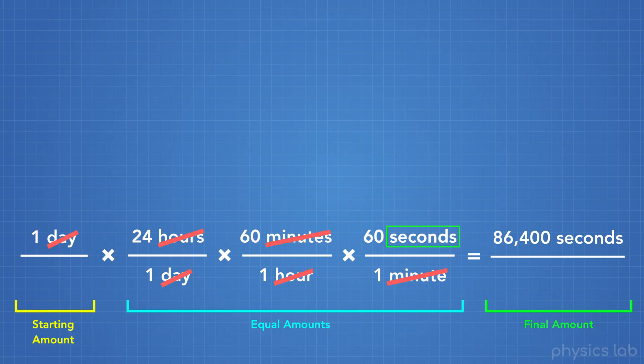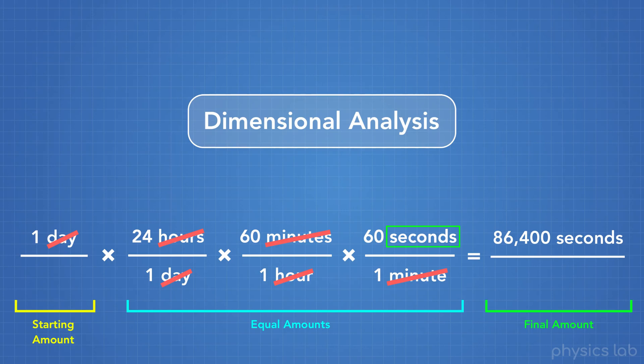So this method of converting between units is called dimensional analysis. And even for really simple conversions, I always use this method so that I know everything is organized and I won't mess up and accidentally multiply when I should have divided or something like that.